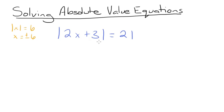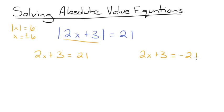So we're going to take our expression 2x plus 3 and set it equal to 21, and then also take the same expression 2x plus 3 and set it equal to negative 21. We do this because the absolute value symbols make any answer positive, so the inside expression could actually be positive or negative. Now all we have to do is solve both equations for x.